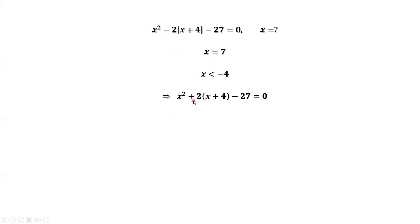Negative, negative, it is positive. We can simplify the left-hand side of this equation. We have x squared plus 2x minus 19 equals 0.